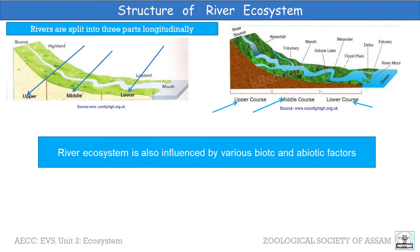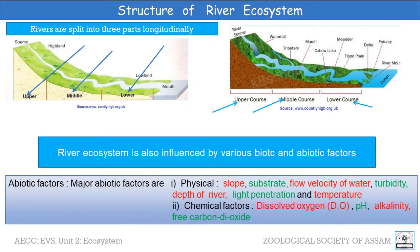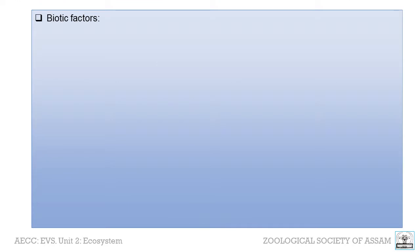The river ecosystem is also influenced by various biotic and abiotic factors. Abiotic factors mainly include physical and chemical factors. Physical factors are slope, substrate, flow velocity of water, turbidity, depth of river, light penetration, and temperature. On the other hand, chemical factors include dissolved oxygen, pH, alkalinity, and free carbon dioxide, which are very important for the survival of the river organisms.